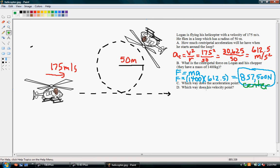Okay, and which way does his velocity point? His velocity point is straight ahead. So, if he were to stop, you know, in his loop at any point during the flight, he would just go off straight forward. Okay, and that's how you calculate centripetal acceleration and centripetal force.